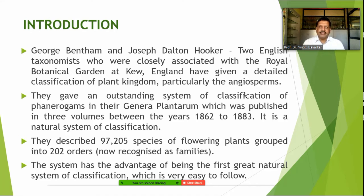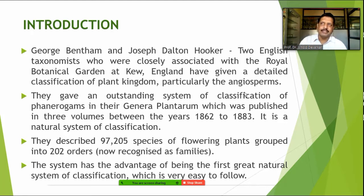This natural classification system was given by Bentham and Hooker. These are two taxonomists who studied plants and their related characterization. They are basically from the Royal Botanical Garden at Kew, and they gave a detailed classification of the plant kingdom, particularly in the field of angiosperms. They gave an outstanding system.